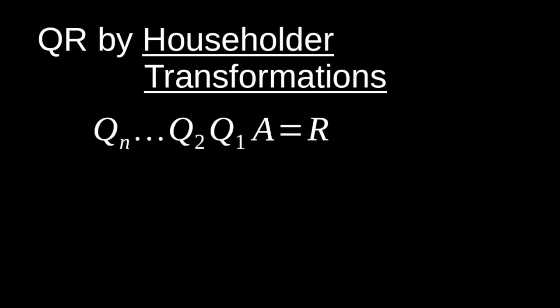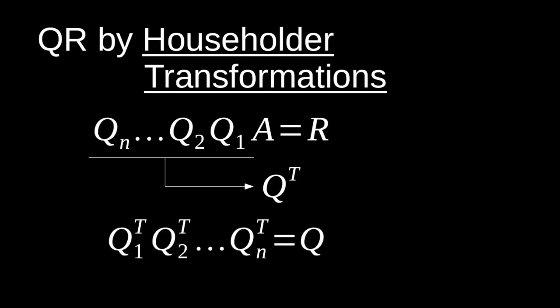The way this process works is we're going to compute a series of QN matrices and matrix multiply them all together, then multiply that product by our A matrix to get our R matrix. We're computing Q1, Q2, Q3, multiple QN matrices, taking the product of all those together. Then we can transpose this to get our actual Q matrix, because A is supposed to equal QR. So we'll have Q1 transpose, Q2 transpose, all the way up to QN.